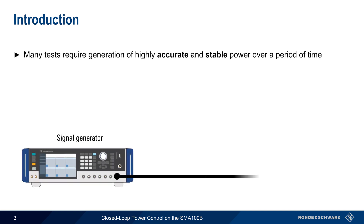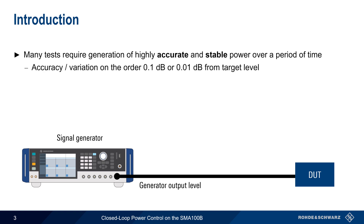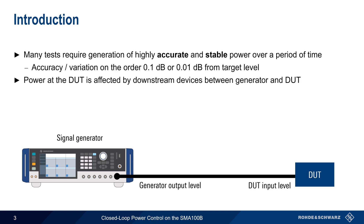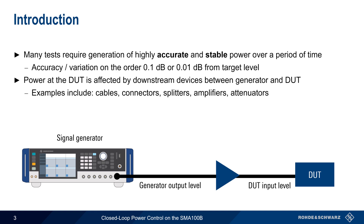Many RF testing scenarios require the generation of highly accurate and highly stable power over a period of time. The required degree of accuracy will vary by application, but accuracy on the order of tenths or even hundredths of a dB is often desirable. Although modern signal generators can easily meet this requirement, the power at the input of the DUT is affected by devices between the generator output and the DUT, such as cables, connectors, amplifiers, etc.